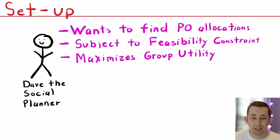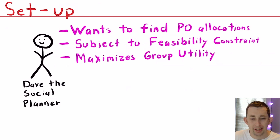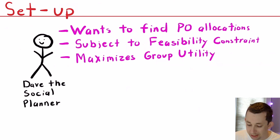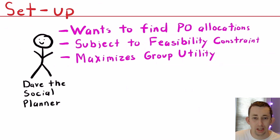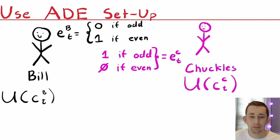The setup for the social planner problem is that we are trying to find Pareto optimal allocations. We talked about Pareto optimality in the last video — it's as if you give all the resources to a social planner, and the social planner redistributes those resources to make everyone as well off as possible. In this scenario, Dave is our social planner. Dave is trying to find Pareto optimal allocations subject to the feasibility constraint, which means maximizing total or group utility amongst all people in the problem.